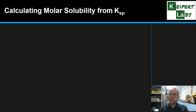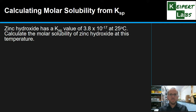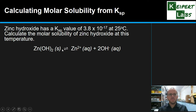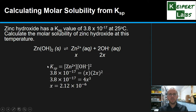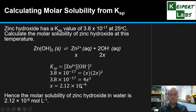So how do we work backwards — from a KSP value to work out molar solubility? Zinc hydroxide has a KSP of 3.8 times 10 to the minus 17. Calculate the molar solubility at this temperature. For the dissolution equation, one zinc hydroxide forms one zinc ion but two hydroxide ions. So if x moles dissolve, we get x moles of zinc and 2x moles of hydroxide. We write the KSP expression and substitute in: 3.8 times 10 to the minus 17 equals x times (2x) squared, which gives 4x cubed. Dividing by 4 and taking the cube root, x equals 2.12 times 10 to the minus 6. Therefore, the molar solubility of zinc hydroxide is 2.12 times 10 to the minus 6 moles per litre.